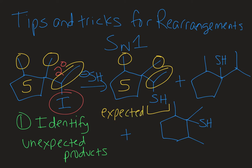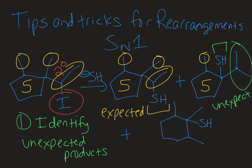Straightforwardly, the leaving group leaves, a carbocation is formed, and then the nucleophile comes in. But if I look at the next product, I still have a five-membered ring and that methyl, but now I have an isopropyl group instead. This is different than the skeletal structure of my starting material, and my nucleophile is on a different carbon than where my leaving group was. So this would be an unexpected product — it must have resulted from a rearrangement.